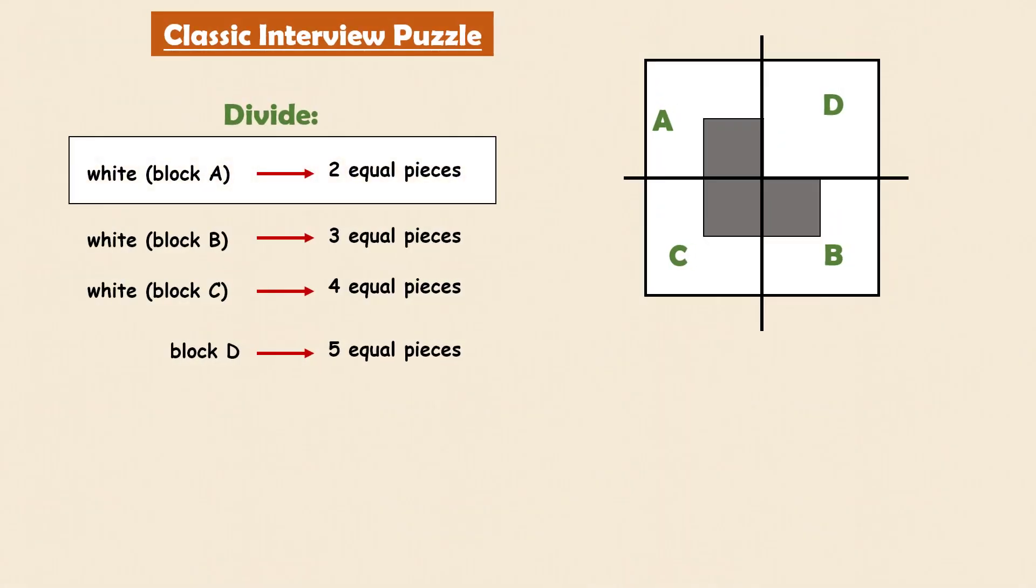The white region of block A is extremely simple to divide into two equal pieces by making a diagonal cut. The white region of block B is also very simple to divide into three identical and equal sized pieces by making these two cuts.